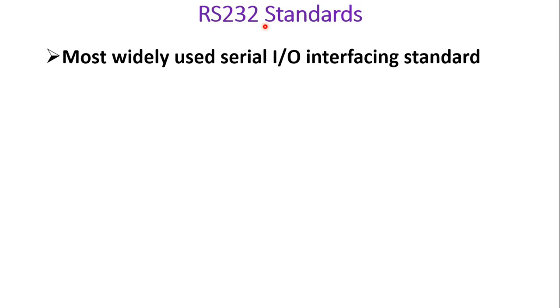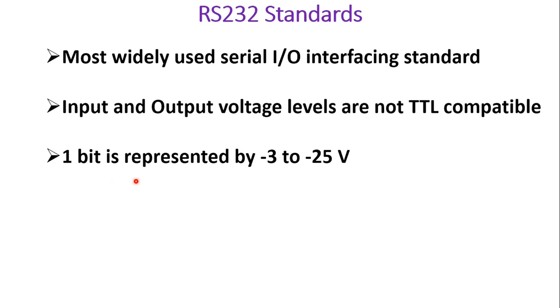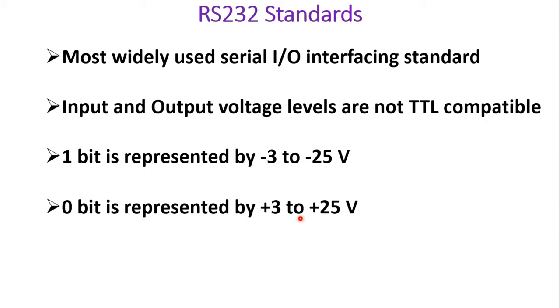Now let us discuss RS-232 standard. RS stands for Recommended Standard. It is the most widely used serial IO interfacing standard. The input and output voltage levels are not TTL compatible. Logic 1 is represented by minus 3 to minus 25 volts, and logic 0 is represented by plus 3 to plus 25 volts — completely different from the TTL level used by Atmega32. The range of minus 3 to plus 3 volts is undefined in the RS-232 standard.